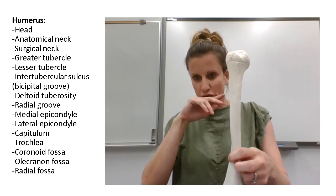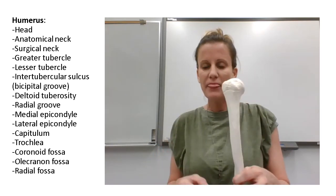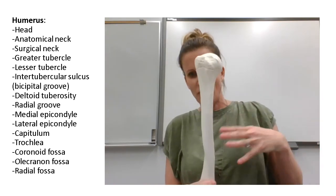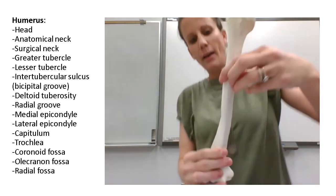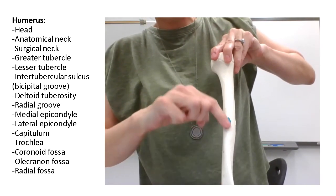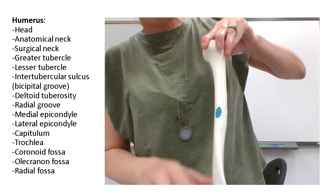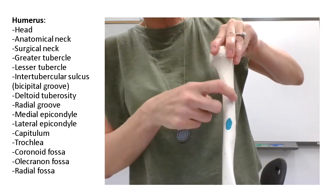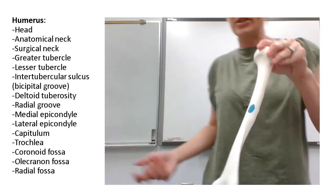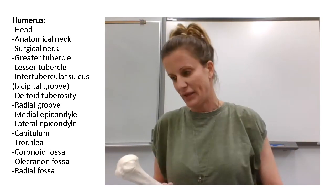The radial groove is a groove that comes around the bone just underneath the deltoid tuberosity. It's really difficult to see on some bones, especially on this synthetic bone where the radial groove wasn't made very well. From the back, you should be able to see a groove coming right by the deltoid tuberosity. You can see how the tuberosity sticks out just a little bit with a groove behind it — that's the radial groove. It's not something easily asked on an exam.